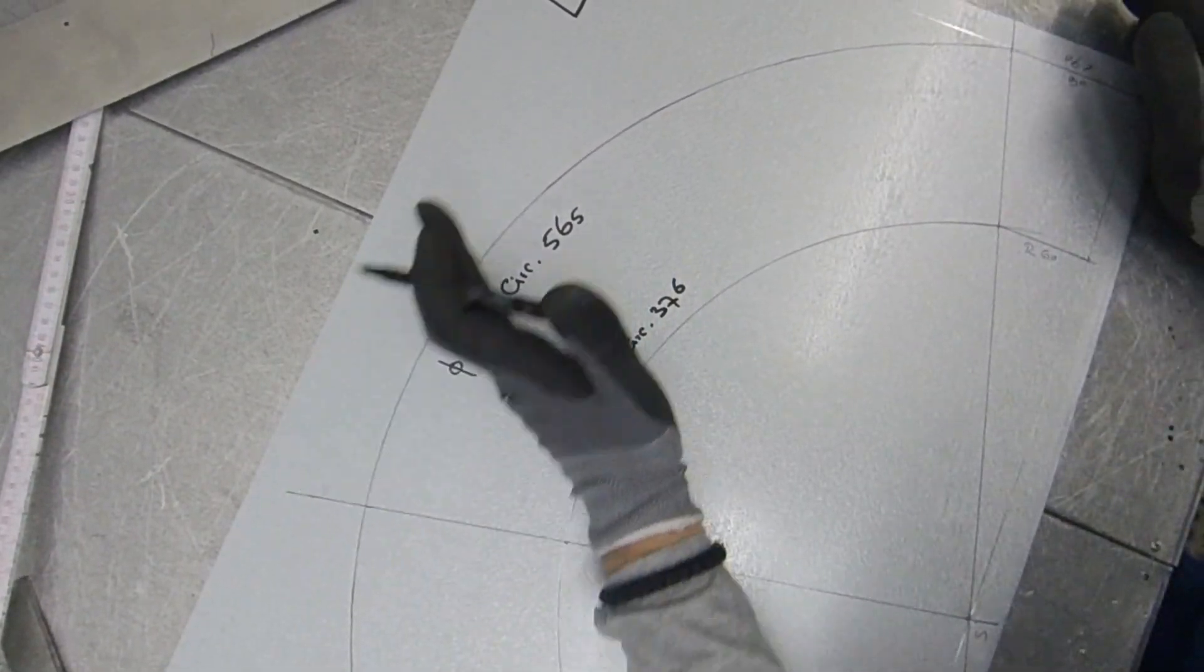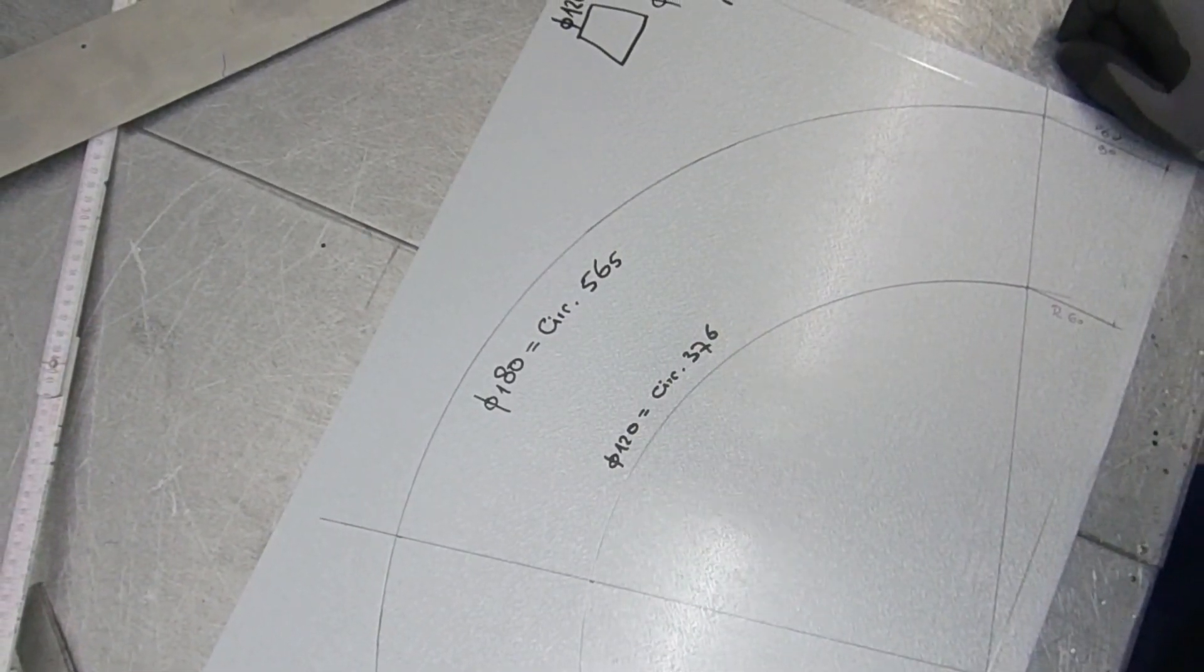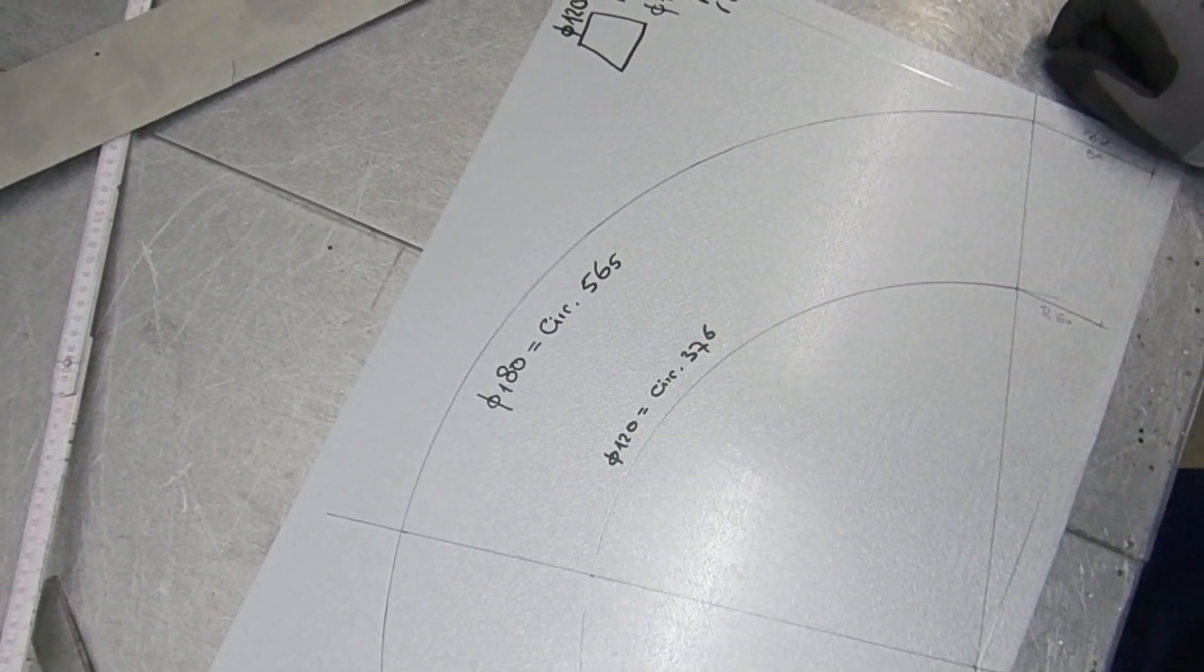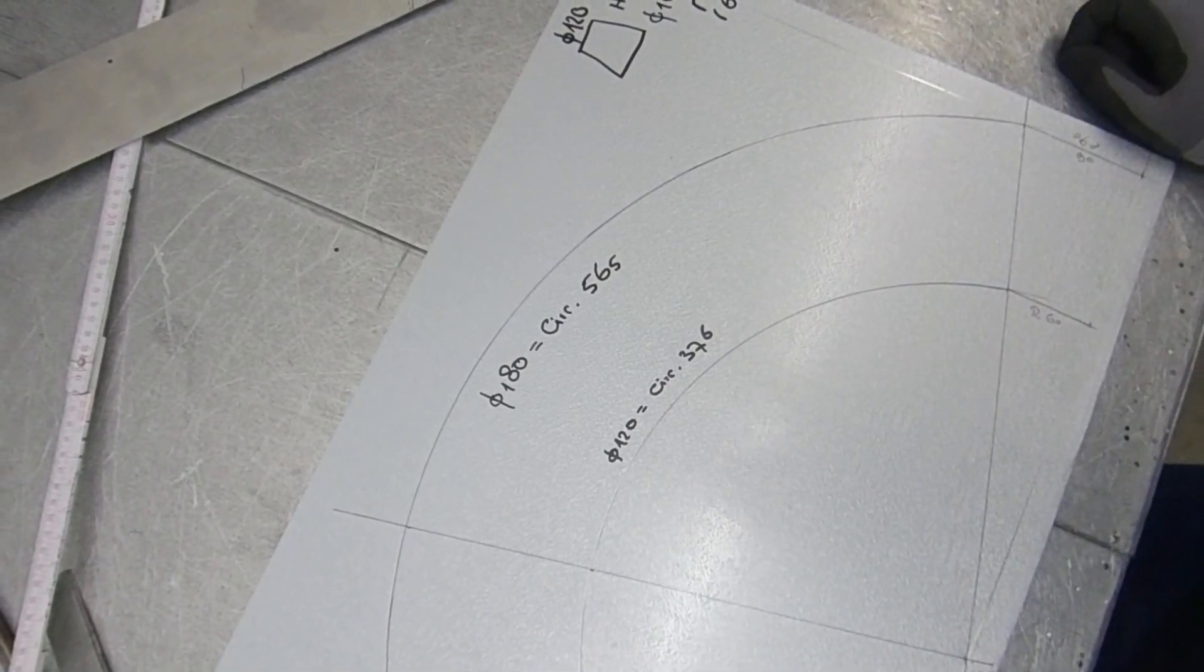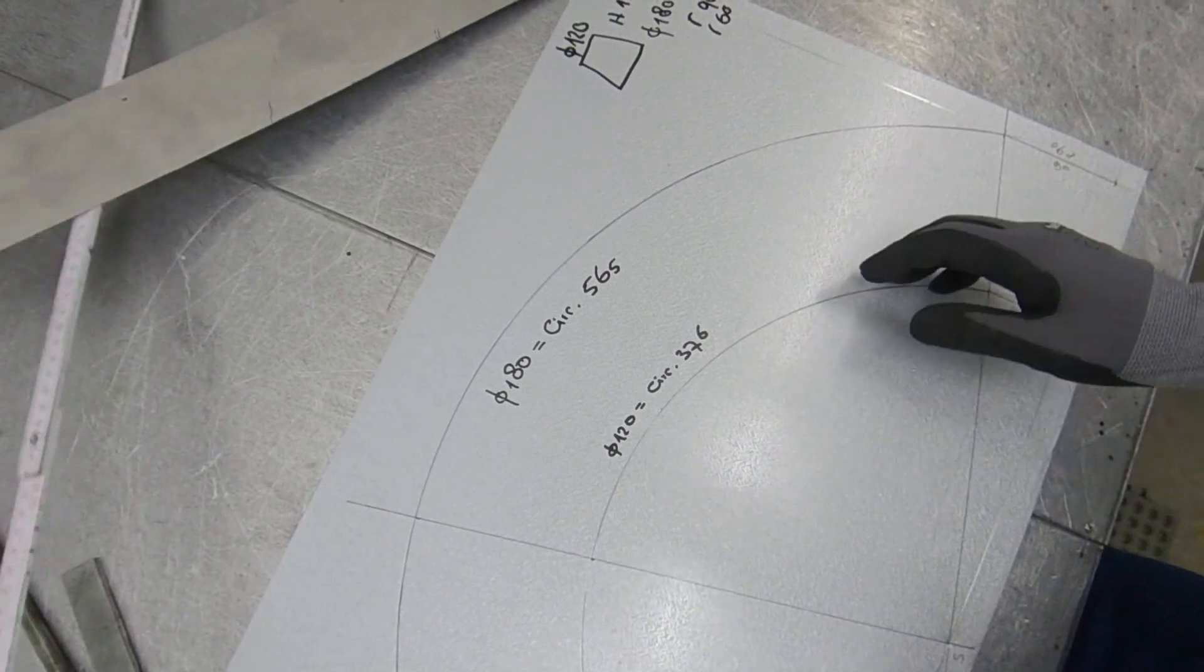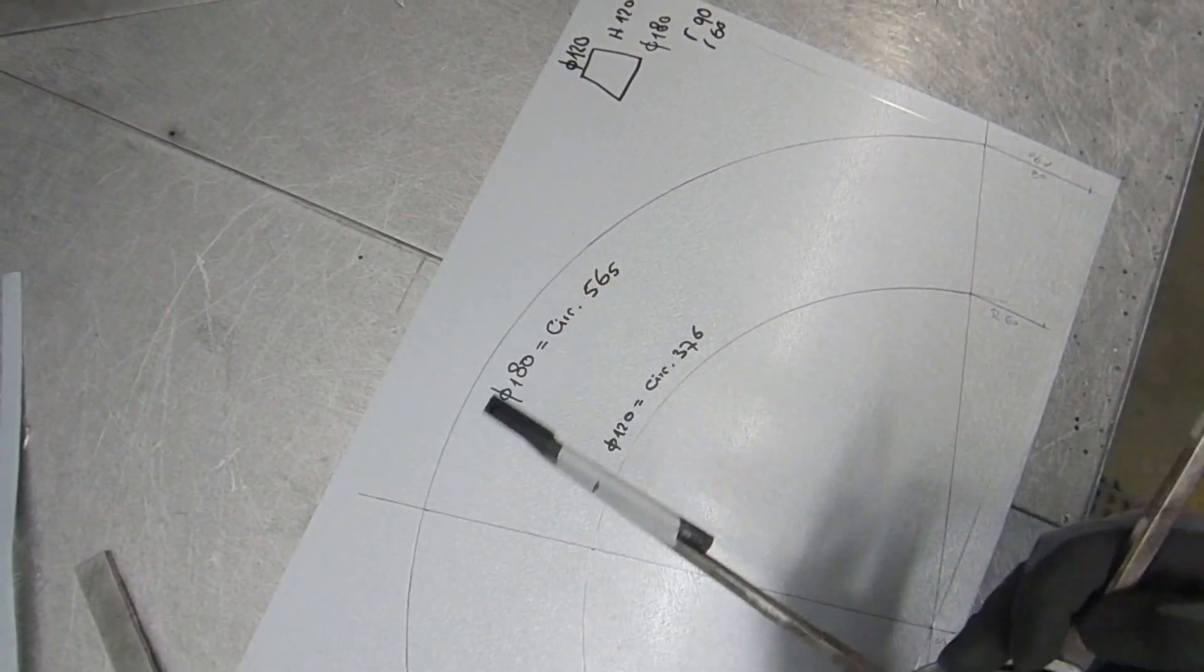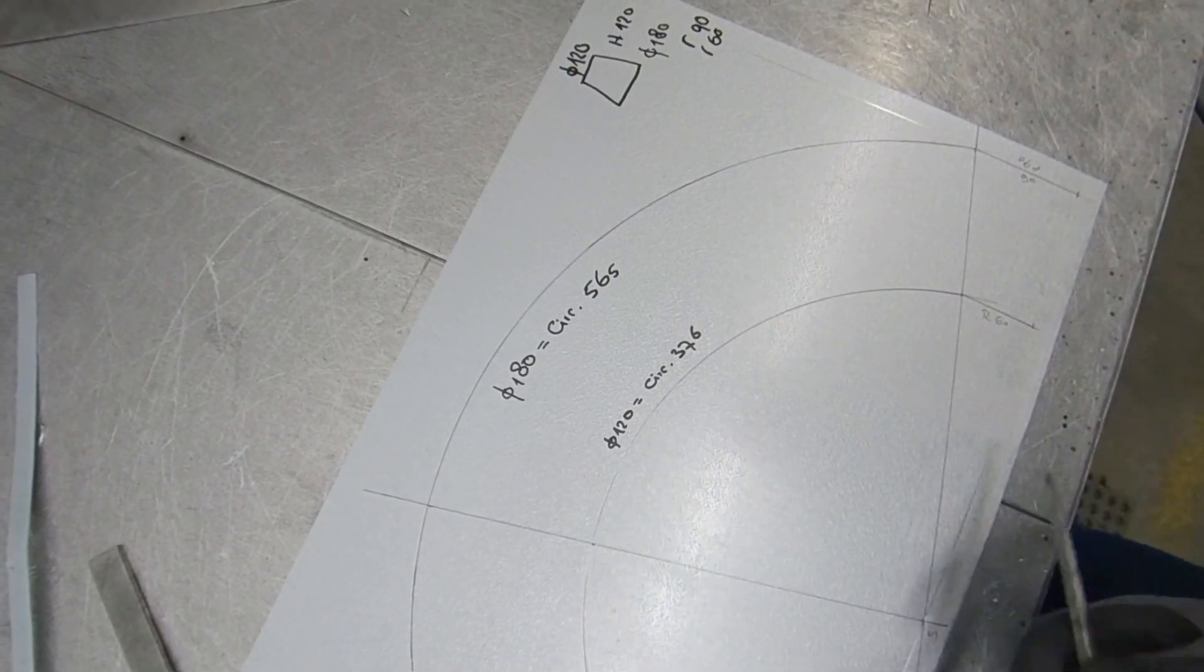So this is now my reducer. Next thing what I'm going to do is I'm going to give a swage allowance. Swage allowance is about - well, at the reducer I always give a little bit more as with a band or something else, because it takes more allowance.